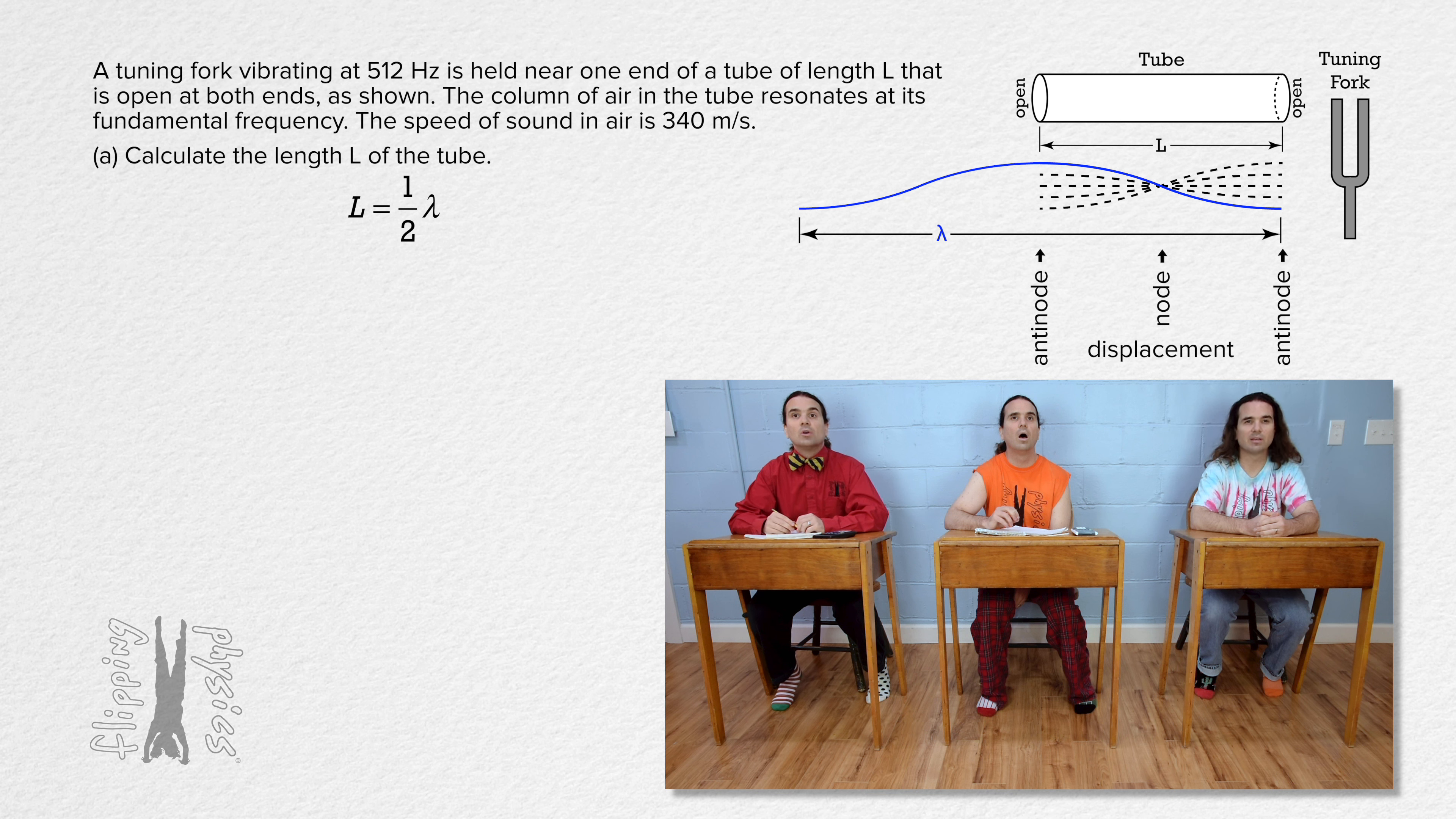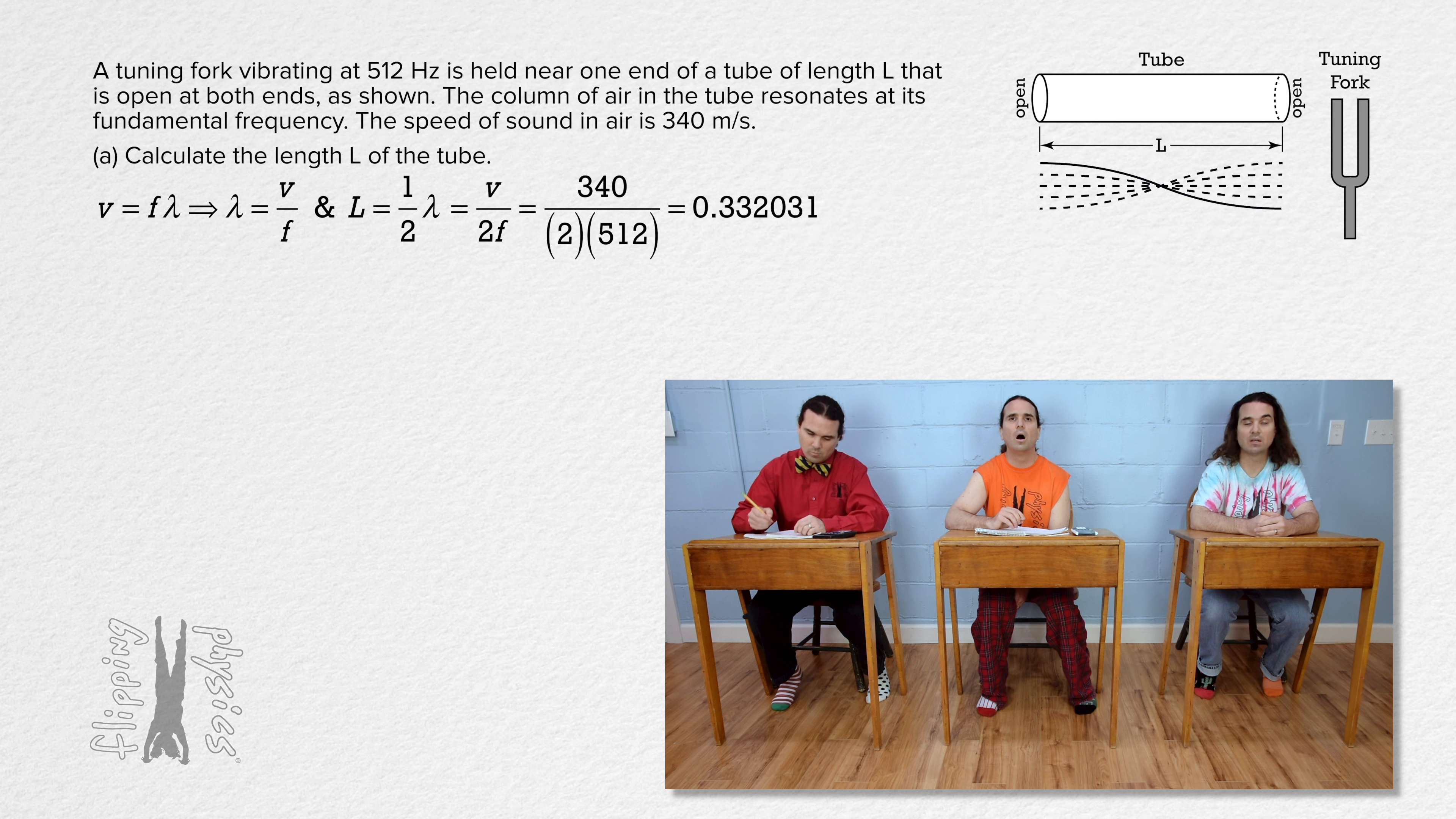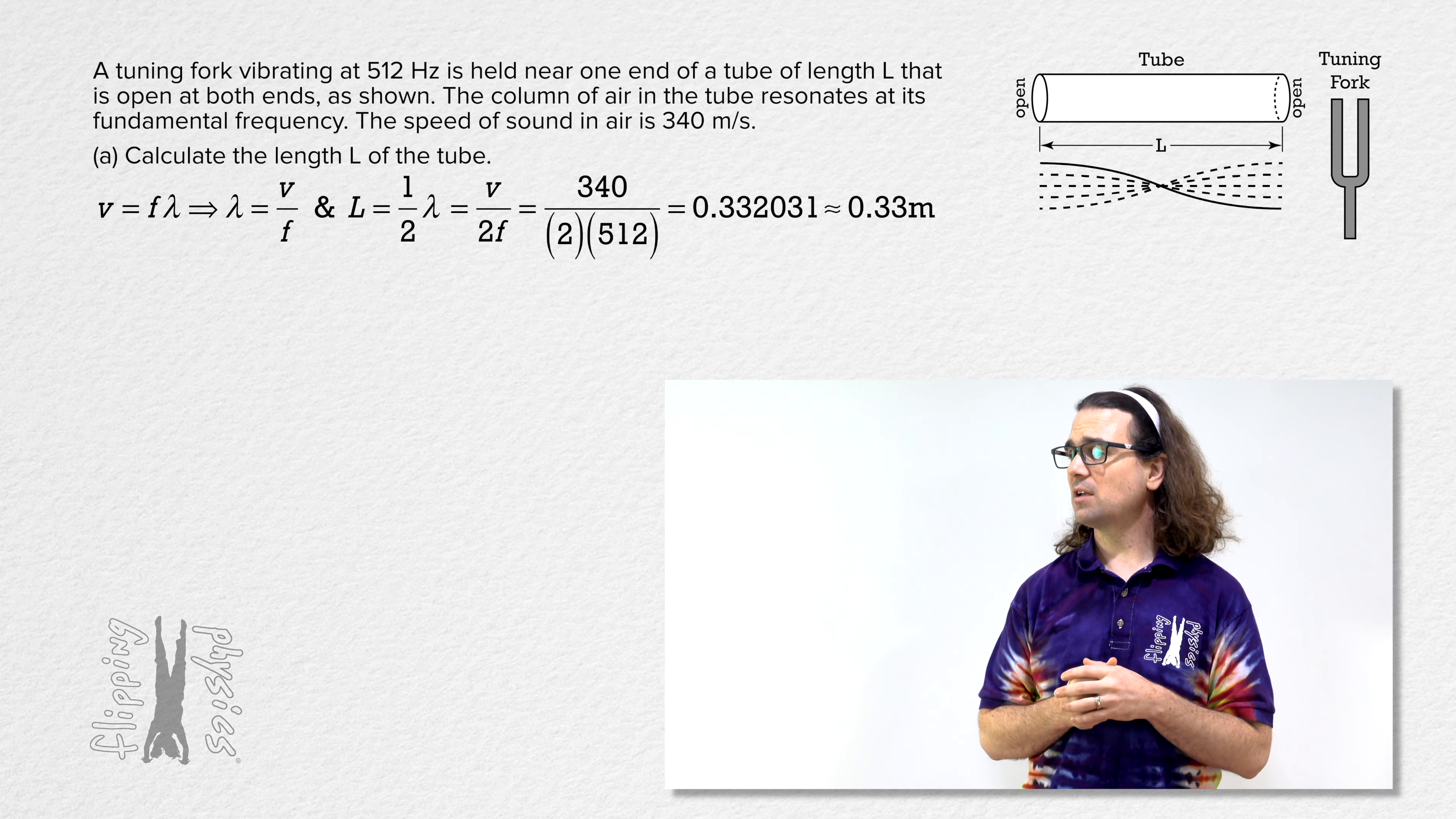Oh yeah, we also know for a wave that speed equals frequency times wavelength. Therefore, we can determine the length of the tube. Wavelength equals speed over frequency. Therefore, the length of the tube equals the speed of the wave over 2 times the wave frequency, or 340 over 2 times 512, which works out to be 0.332031, or 0.33 meters with 2 sig figs. Well done, Bo.